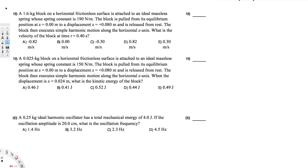Let's do this problem. The first question: a 1.6 kilogram block on a horizontal surface is attached to an ideal massless spring whose spring constant is 190 Newton per meter. The block is pulled from its equilibrium position at x = 0 meters to a displacement x = 0.08 meters and released from rest. The block then executes simple harmonic motion along the horizontal x-axis.